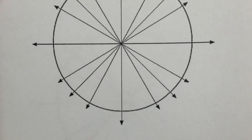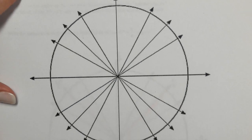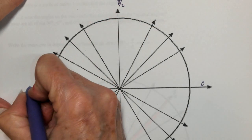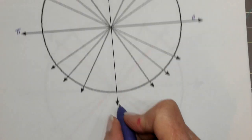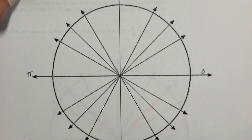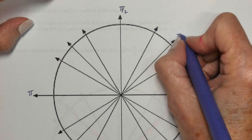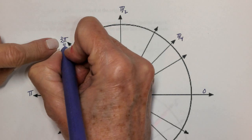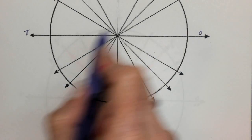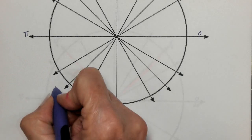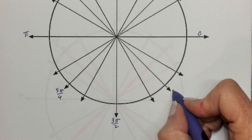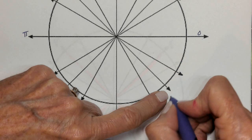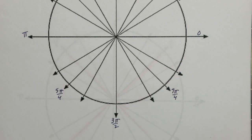Let's put it all together on the next unit circle. The axis angles: 0, pi over 2, pi, 3 pi over 2. The pi over 4 angles: pi over 4, 3 pi over 4, then 4 pi over 4 reduces to pi, 5 pi over 4. This pi over 4 is 1 less than 8 pi over 4, so this is 7 pi over 4. Those are all the pi over 4s.